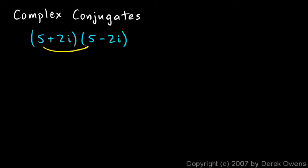And watch what happens. The first, we have 5 times 5, which is 25. And then the outer, we have 5 times negative 2i, which gives me minus 10i. And then for the inner, we have 2i times 5, which is a positive 10i.